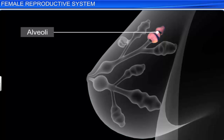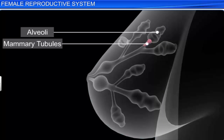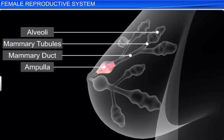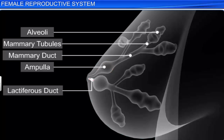The alveoli open into the mammary tubules. The tubules of each lobe join to form the mammary duct. Several ducts join to form a wider ampulla, which is connected to the lactiferous duct. The lactiferous duct opens out through the nipple, from which milk is sucked out.